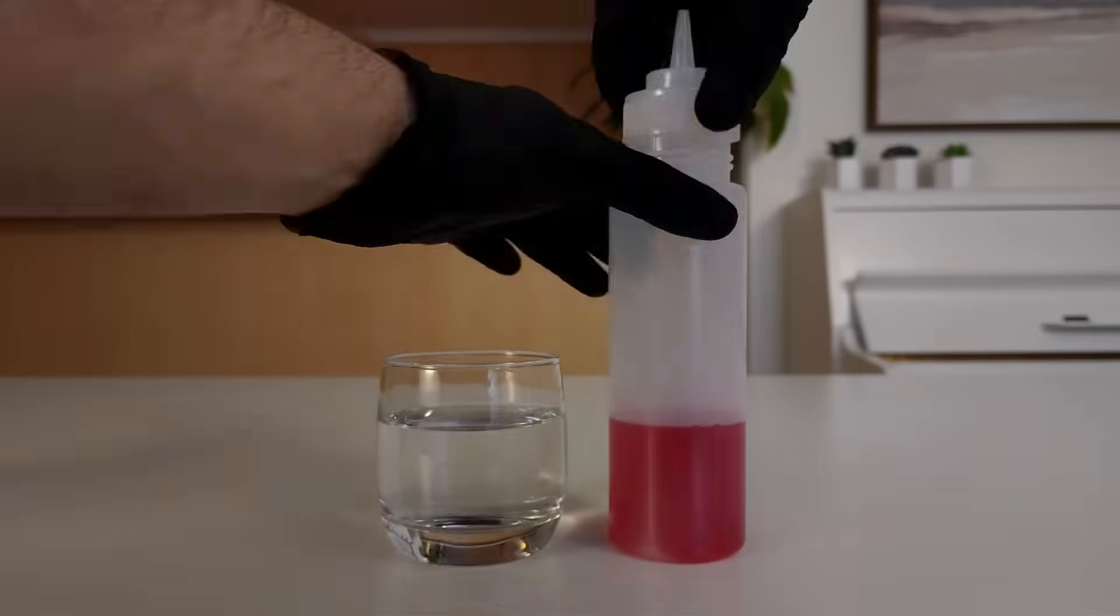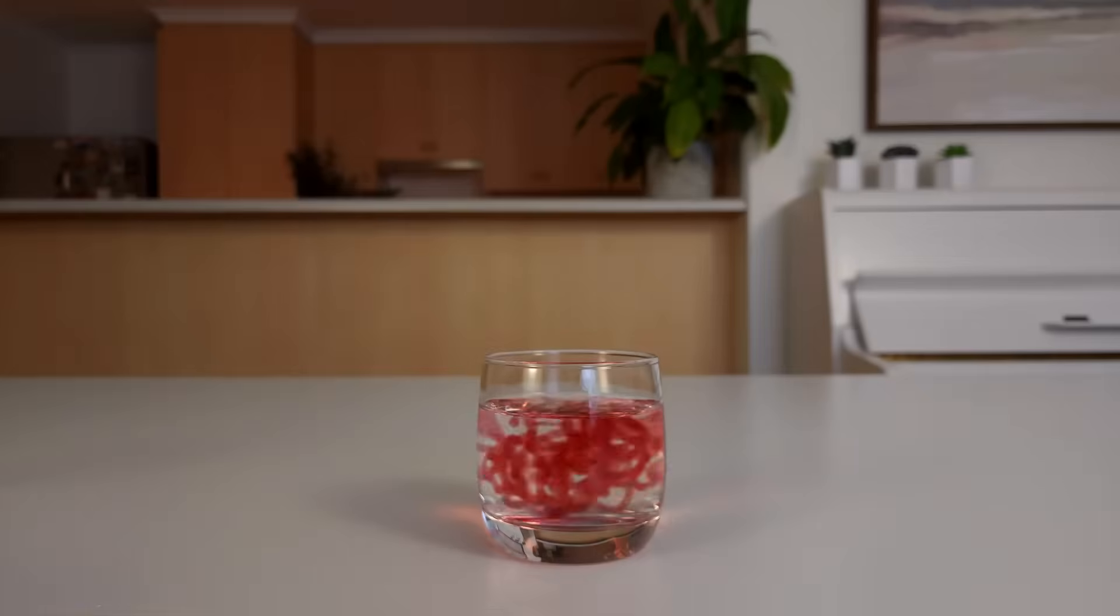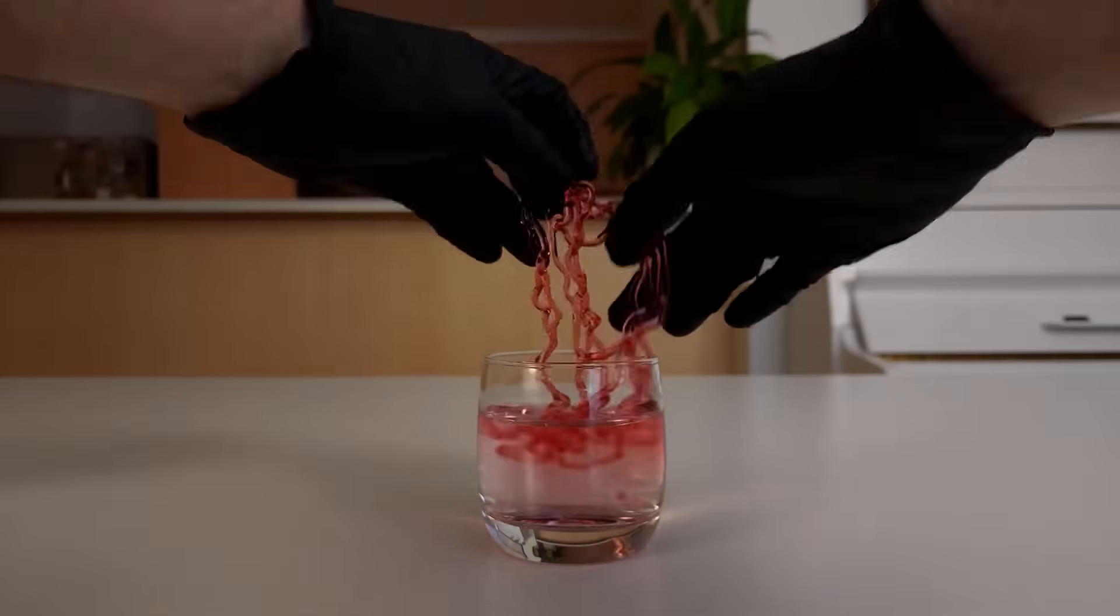By combining these two liquids, you can instantly make a super long, super slimy, jelly-like substance that looks just like a worm.